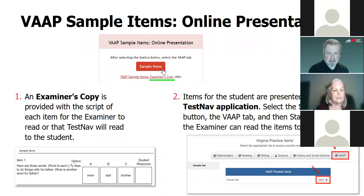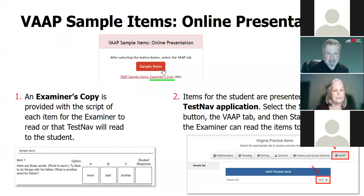These are sample items for examiners to look at. You would go to that link and on the far right you'll see tabs for mathematics, reading, writing, science — those are SOL sample items. You don't want to click on those if you're looking for VAP. VAP is all the way on the right, so you would click on that VAP tab, and that would bring up those 10 sample items.